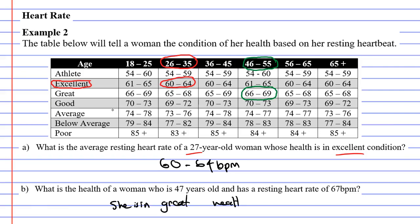You'll notice when you look at the table, there's people who are in poor health, below average health, average health, and so on. Anyway, that concludes our video on example two. Remember to read the description below for links to a theory booklet that relates to this video.